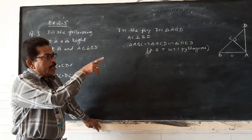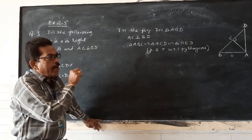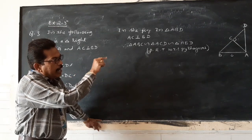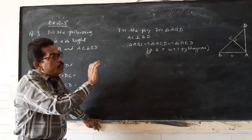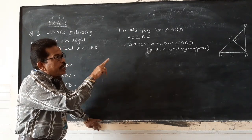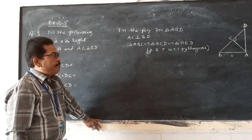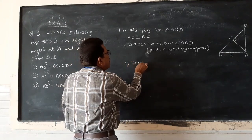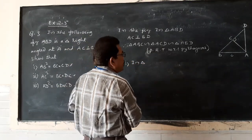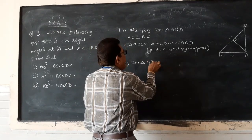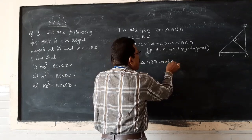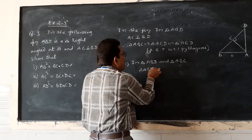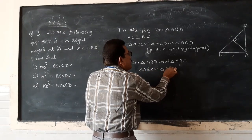If the perpendicular is drawn from the right-angle vertex to the hypotenuse, that makes triangles ABC and ADC similar. These two triangles are also similar to triangle ABD, which is the main triangle. Now let us do the first one. Triangle ABD is similar to triangle ABC, by the property of right triangles with respect to Pythagoras.